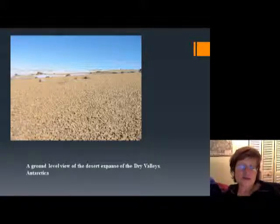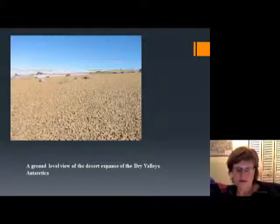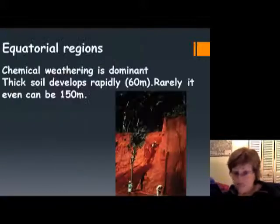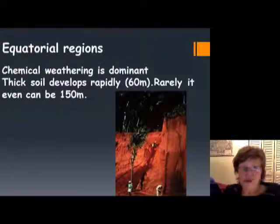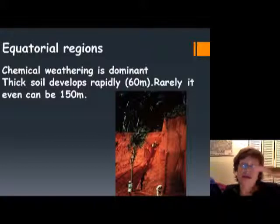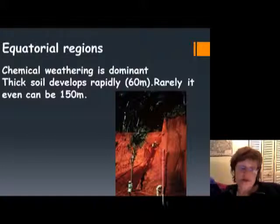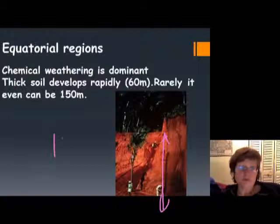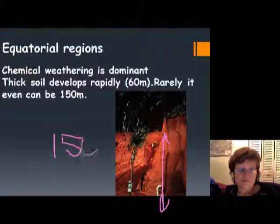This is a good picture from Antarctica — you can see the soil horizon is not very well developed there. On the other hand, if you are in the equatorial region like a rainforest, the soil we're going to have can be as thick as 150 to 160 meters — which is incredible.